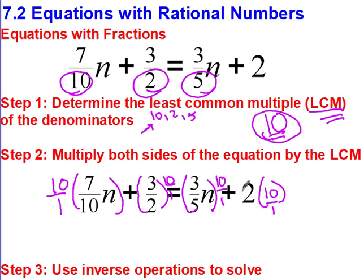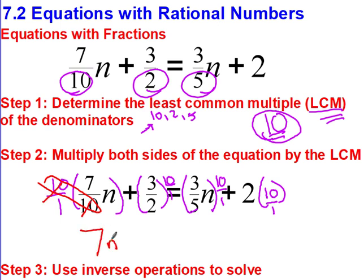By multiplying everything by the exact same thing, I'm keeping the equation equal — the left side and right side are totally balanced, and I'm not changing my value for N. This is where cross-simplifying comes in handy. Because I multiplied everything by 10, I look at 10 and 10 — these cancel each other out — and I'm left with just 7N, because the 7 hasn't gone away.